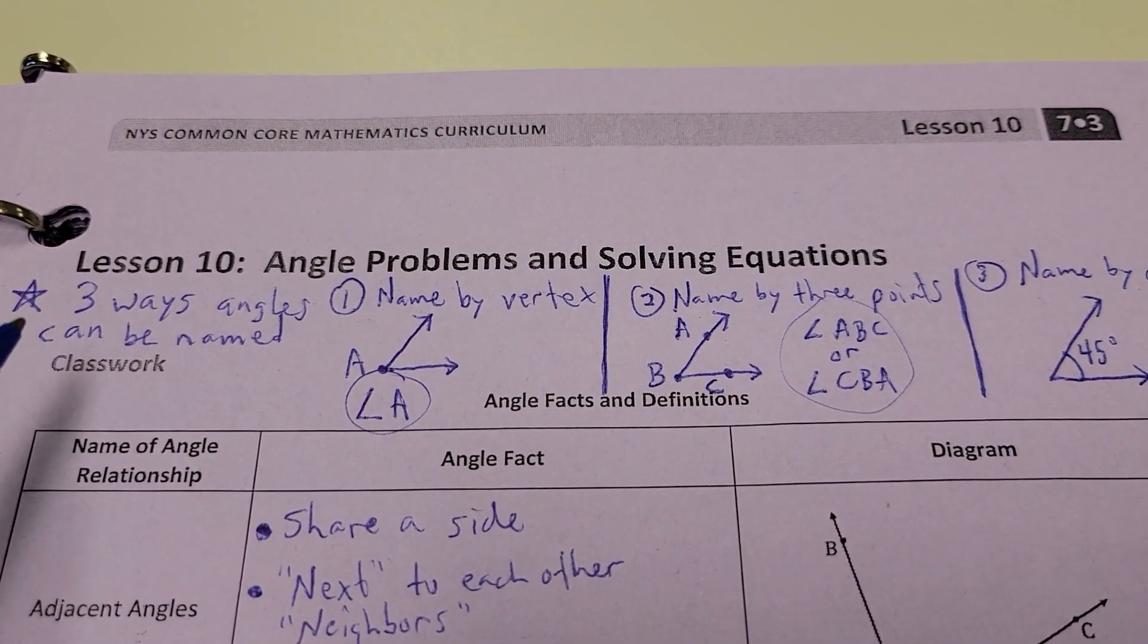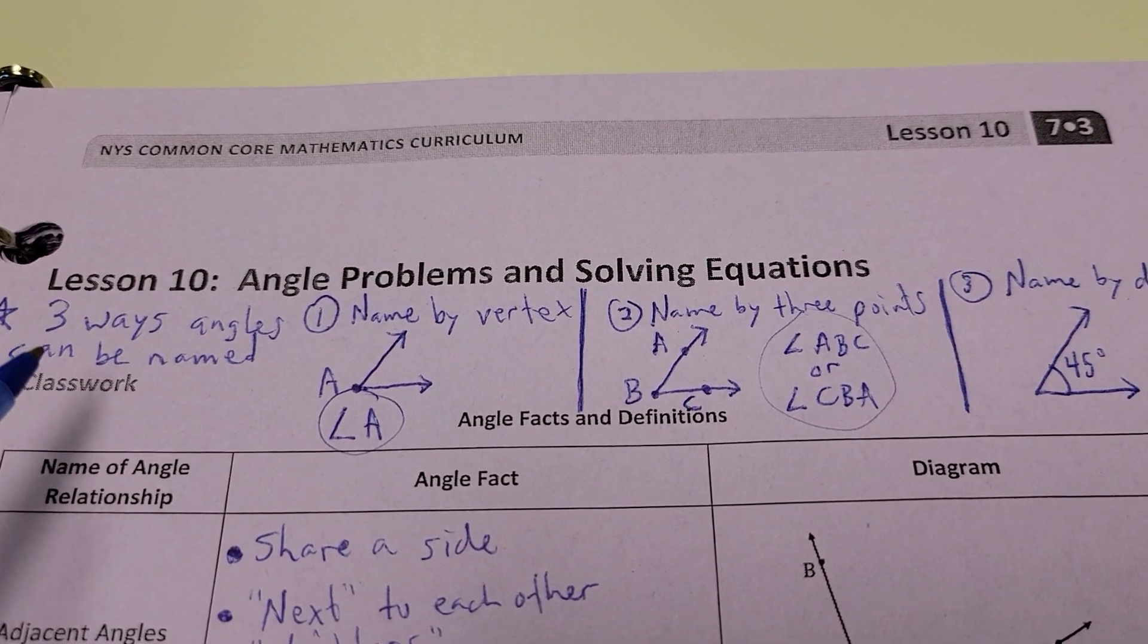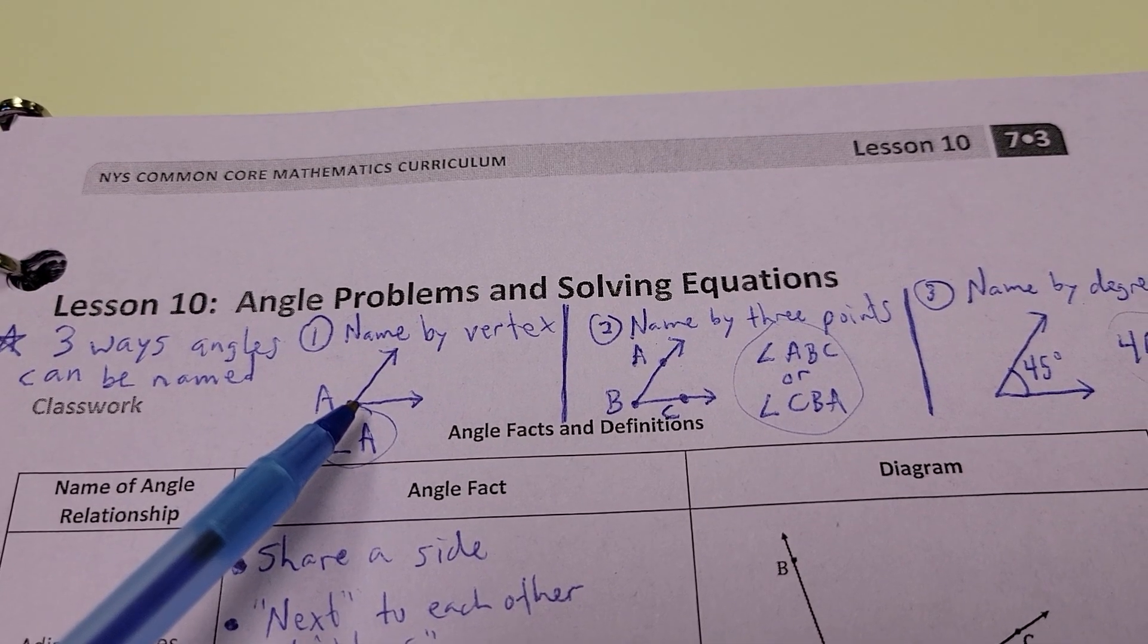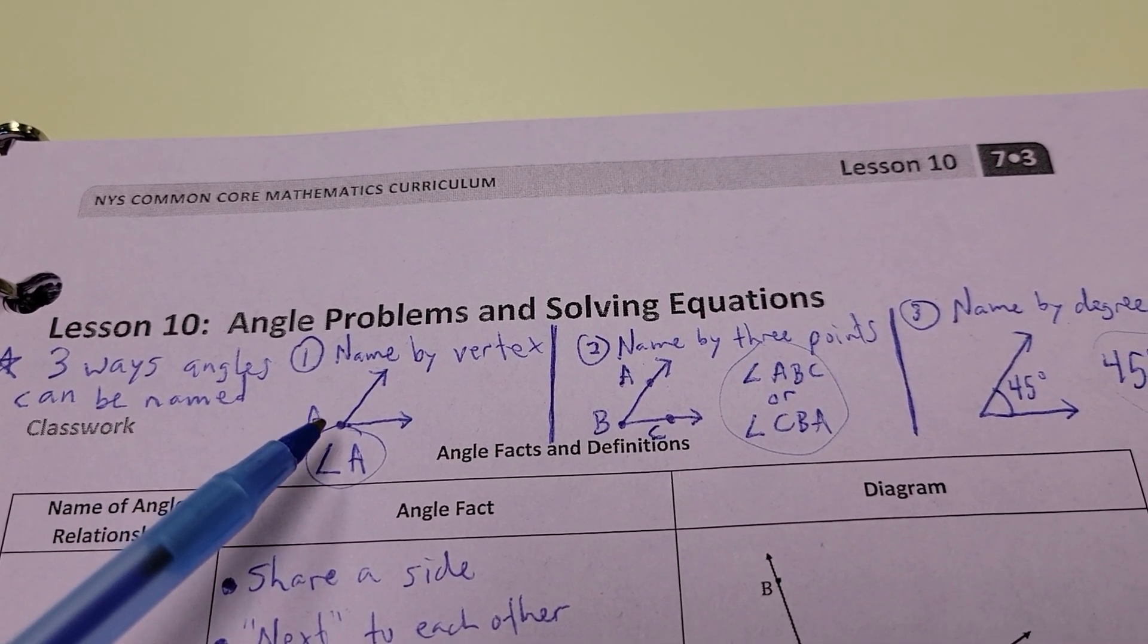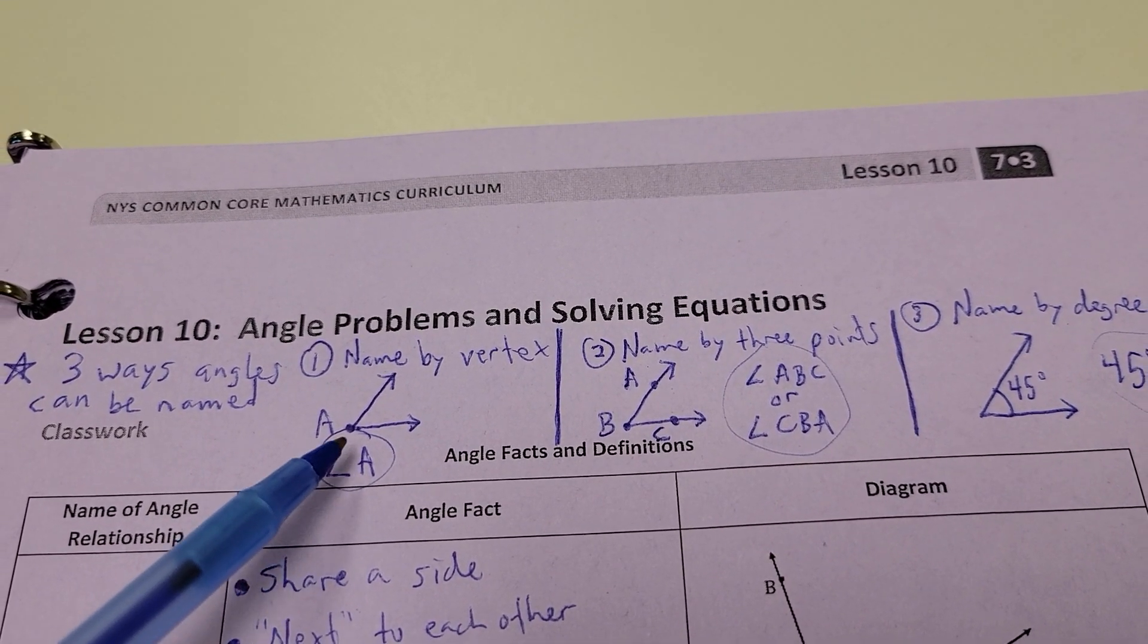Alright, lesson 10. Angle problems and solving equations. Our goal here today is you are going to find certain relationships between angles in diagrams and you can build an equation to help solve to find missing angles. Now, there are three ways that angles can be named. You can name it by the vertex. The vertex is right here at the point where the angle starts, where it shoots off with two rays or there is an intersection of some type of lines. So, I could call this angle A.